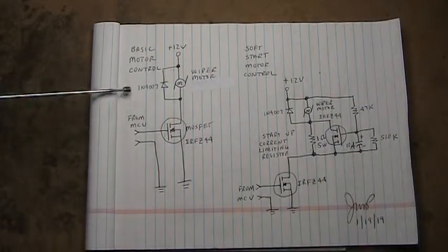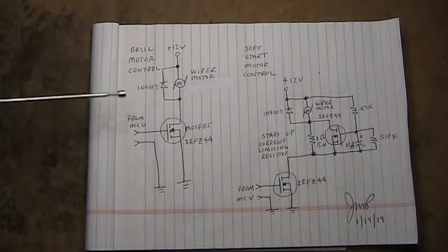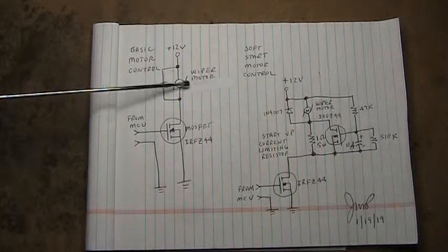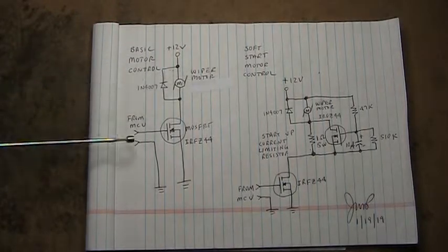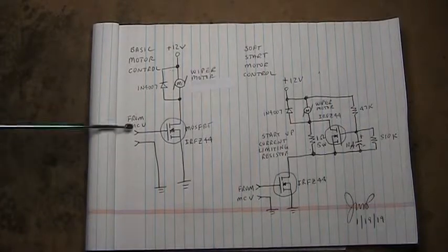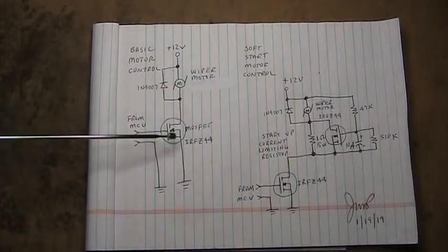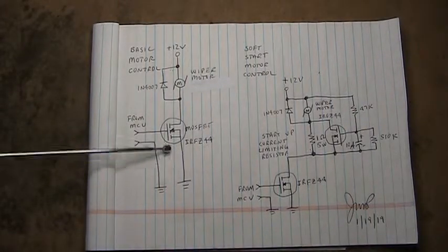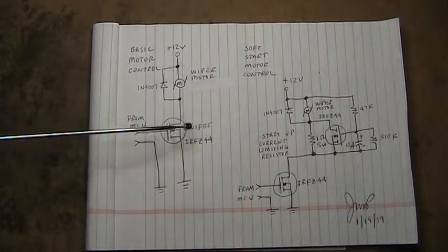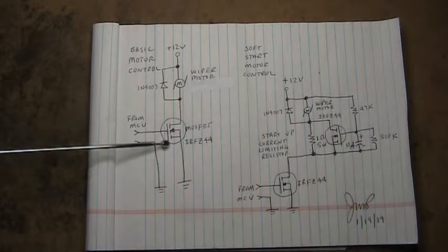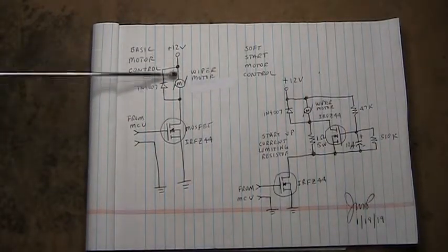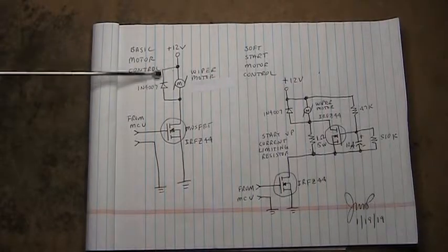This is a basic motor control that most guys use with their animatronics driving a wiper motor. What happens is you've got your microcontroller or whatever controller driving the gate of a MOSFET. Generally in this case I use the MOSFET and that turns this transistor on which provides current through the wiper motor.